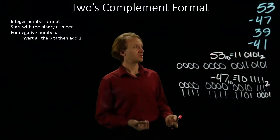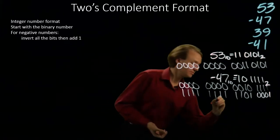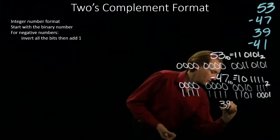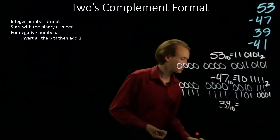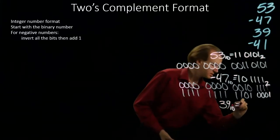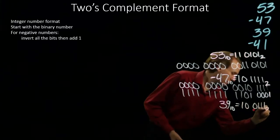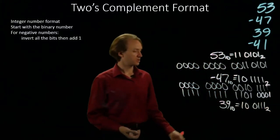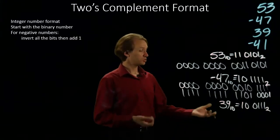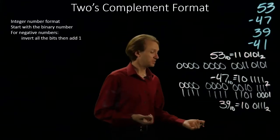My third example is 39. 39 is 32 plus 7. So there's 39 in binary. And I'm just going to write this number with 16 bits again.